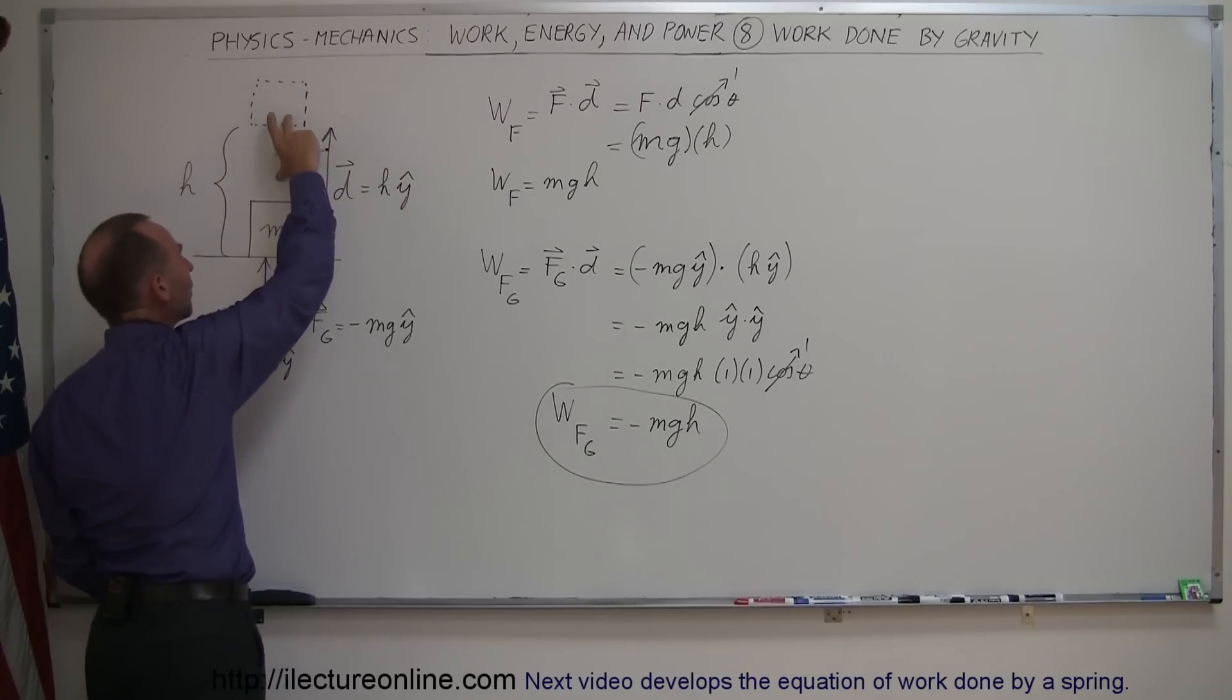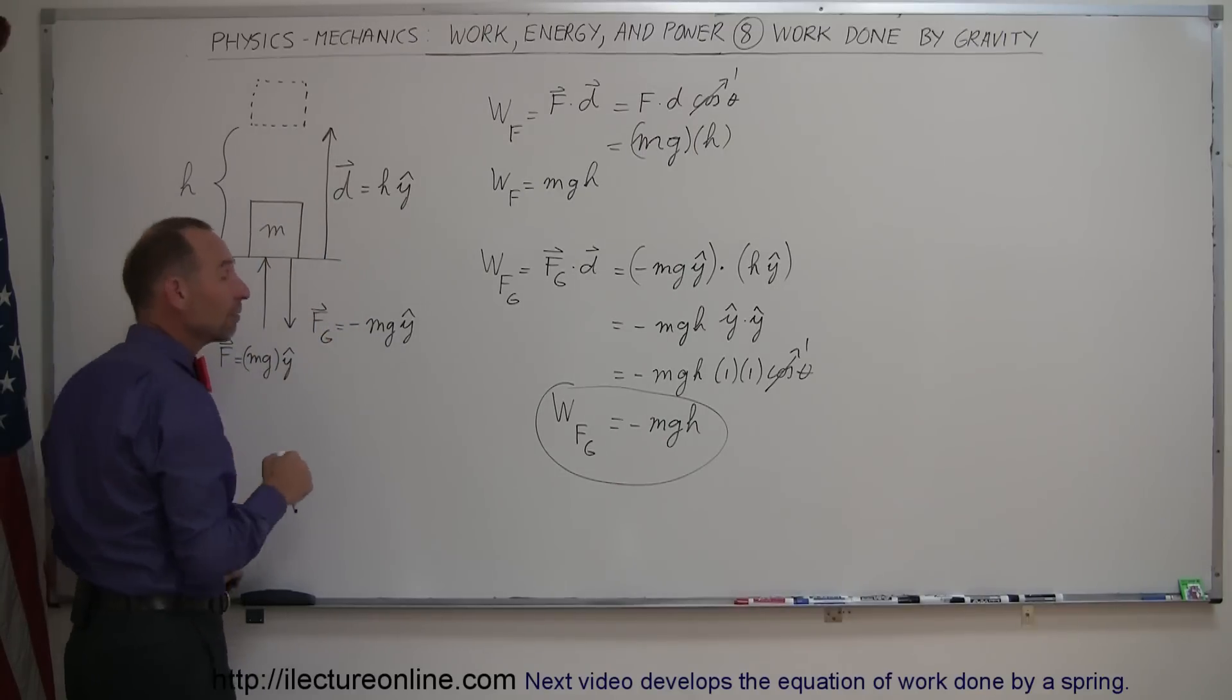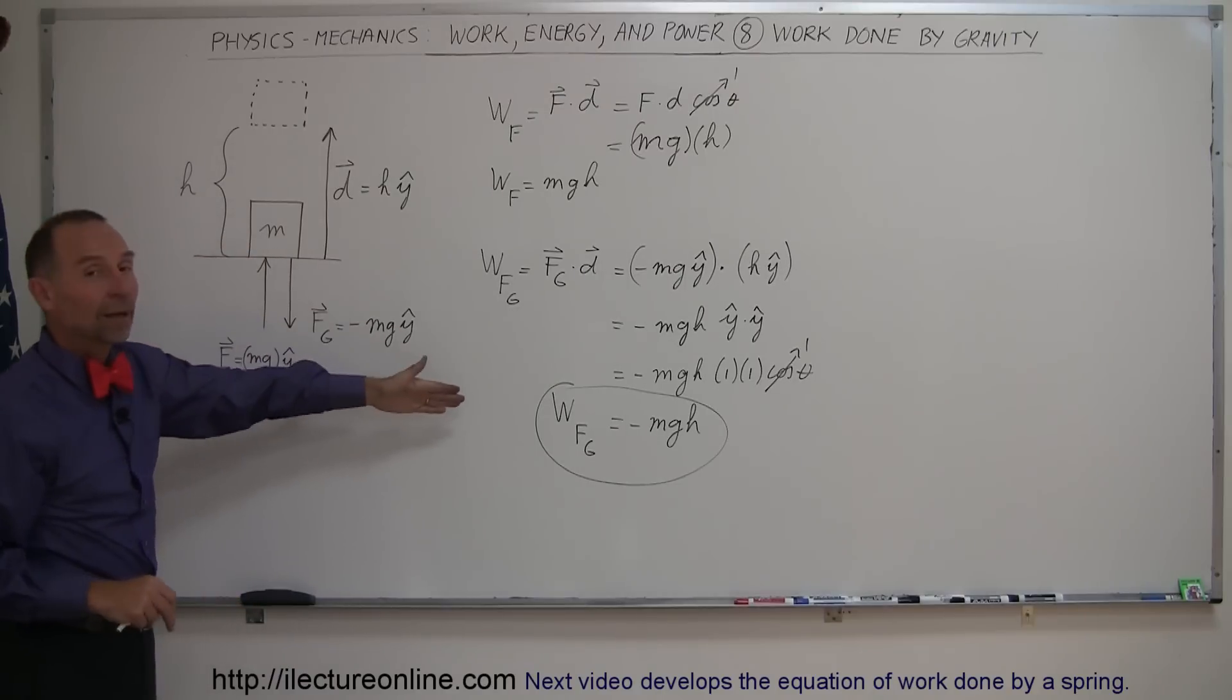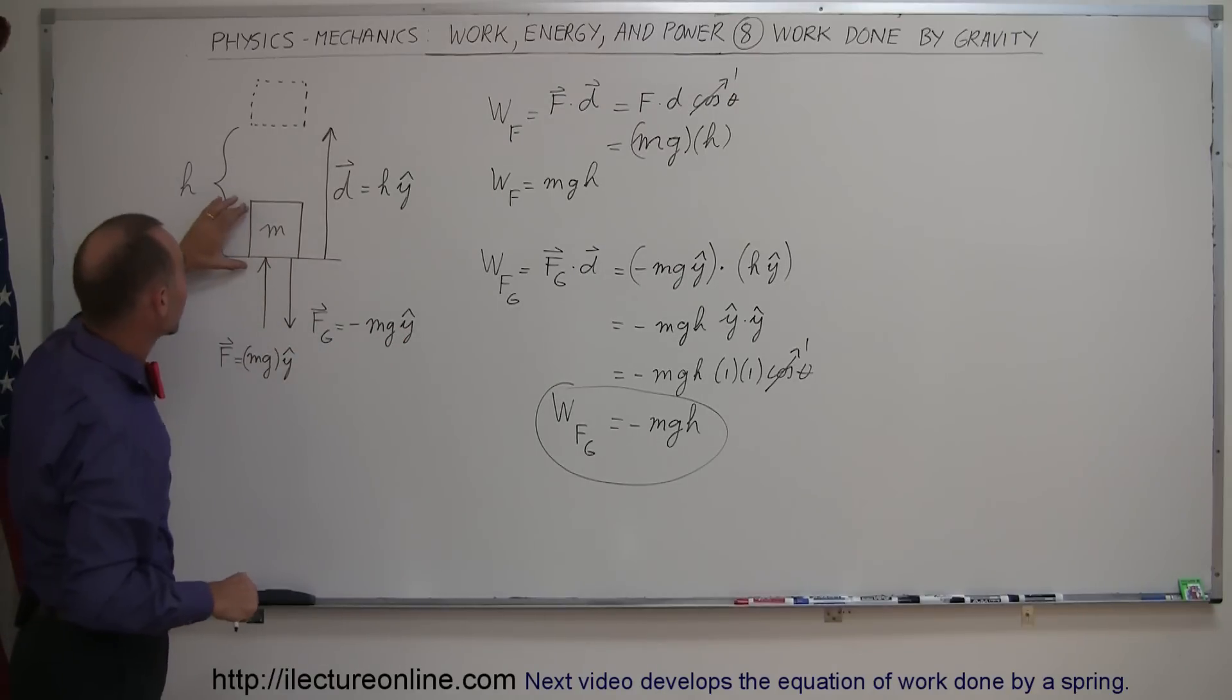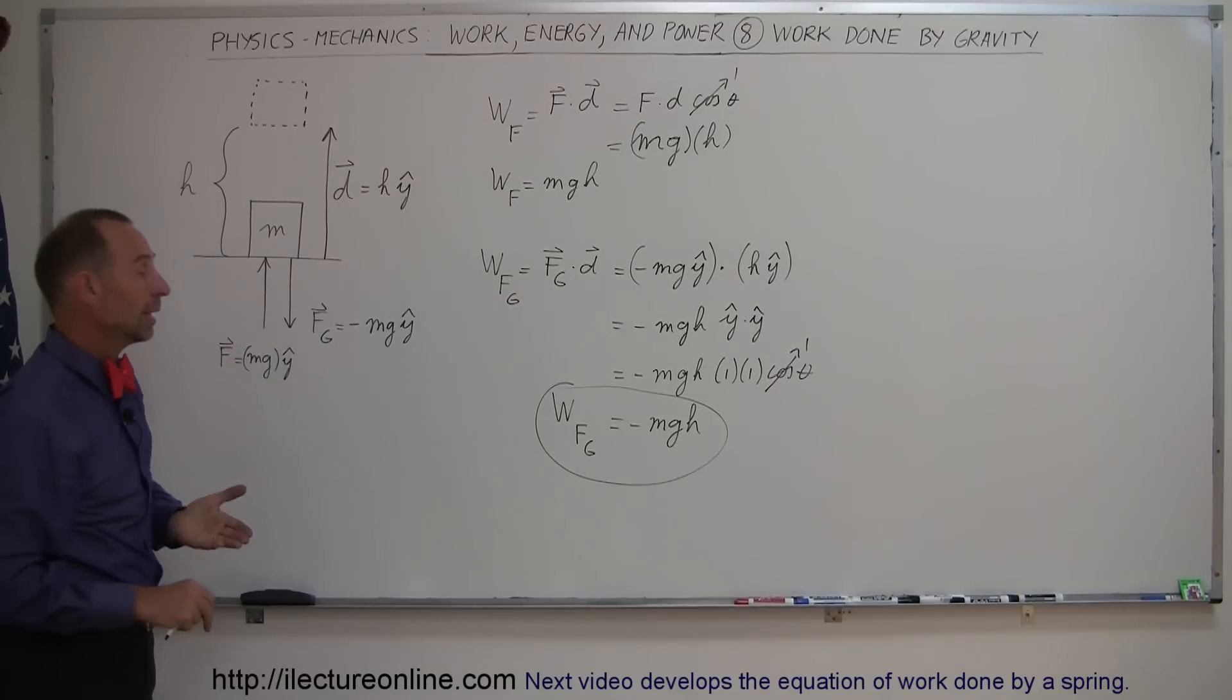Which means that if we have the block up here at a height h, and we allow the block to come down because of the force of gravity back down to the ground, then the work done by gravity will be positive. So when an object is lowered in elevation, the work done by gravity is positive. When an object is risen up in elevation, then the work done by gravity is a negative quantity.